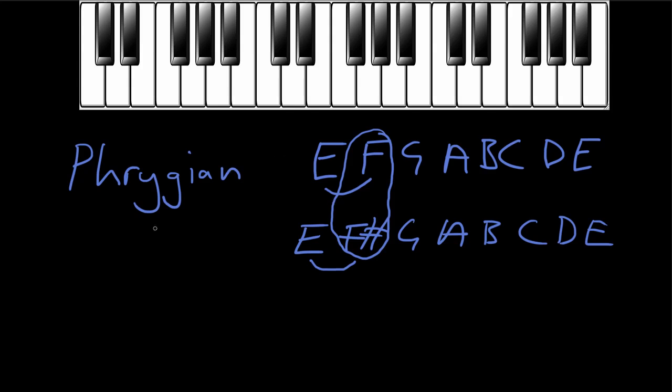So we might say one of the characteristics of the Phrygian mode is it has this flattened second sound—that the second note of the mode is very close, only a semitone away from the first note or the root note. And that's what gives us this kind of exotic sound of the scale.